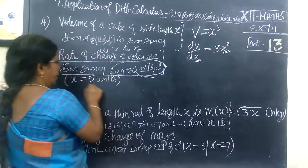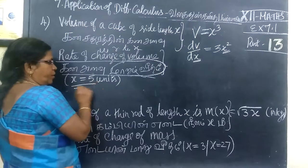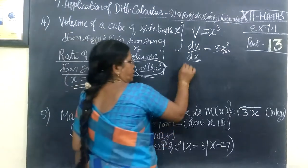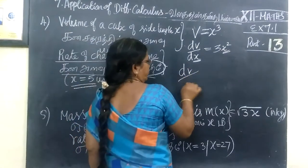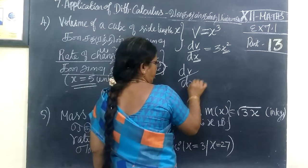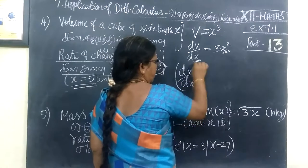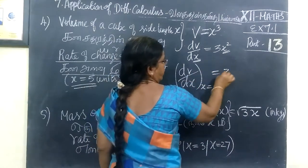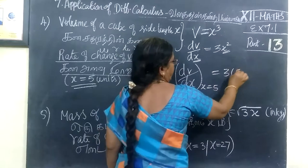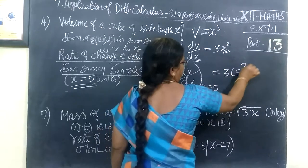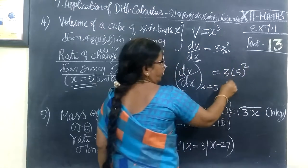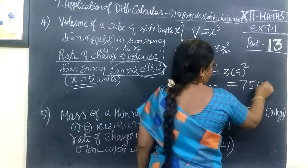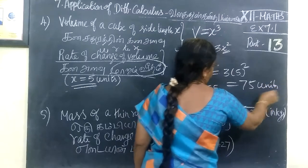When x is equal to 5 units, the value is equal to 75 units.